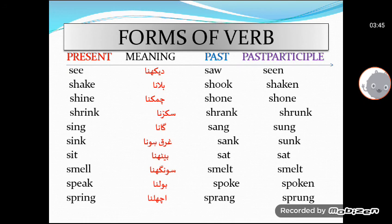So these are twenty forms of verb. You have to learn them — learn by heart. Yeh aap ko zubani yaad karni hai — with the spellings and with the meanings. That can help you to understand and to make sentences. Jab sentence translation par aayenge, to these will help you very much. Yeh aap ko bahut zyada mein help out karayenge. So that's why you have to learn them carefully.